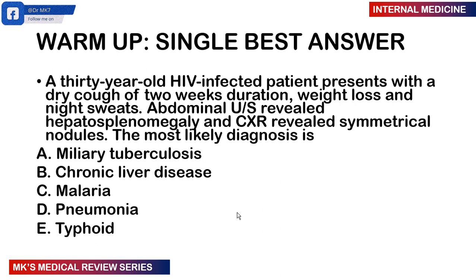In the vein of restructuring my new lectures, I usually start off with a warm-up question. This is the single best answer. A 30-year-old HIV-infected patient presents with a dry cough of two weeks duration, weight loss and night sweats. Abdominal ultrasound reveals hepatosplenomegaly and chest X-ray reveals symmetrical nodules. The most likely diagnosis is: Miliary TB, chronic liver disease, malaria, pneumonia, or typhoid. I will give you the answer at the end of the lecture.